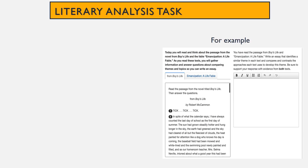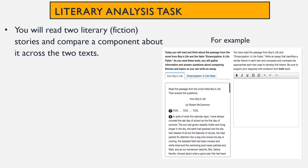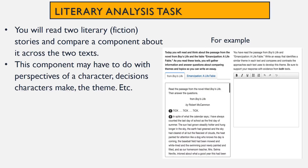The first type of task we'll review is a literary analysis task. In this task you'll read two literary stories and compare a component about it across two texts. This component may have to do with the perspective of a character, the decisions the characters make, the theme, or something else related to the section. Your response will focus on answering the prompt and using evidence from the story. After you use this evidence that's relevant, you want to explain it to prove your claim is correct.